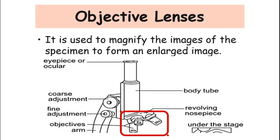Next are the objective lenses. They are used to magnify the images of the specimen to form an enlarged image. These are essential parts of a compound microscope, aiding in magnifying the sample several times larger than its original size. Together with the magnification power of the eyepiece, the objective lenses help provide a more detailed image of the sample. A typical compound microscope contains four objective lenses: the scanner lens, the low power objective lens, the high power objective lens, and the oil immersion objective lens.